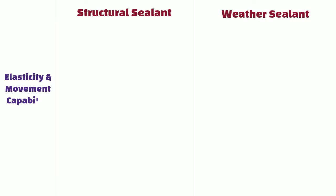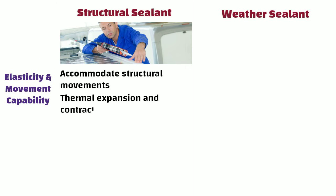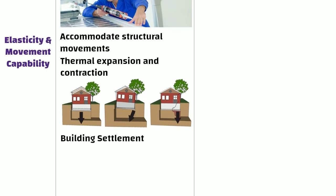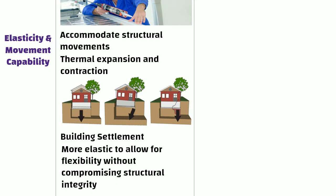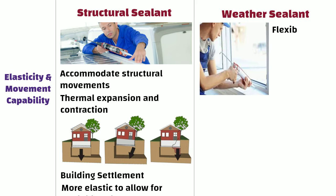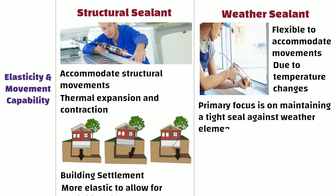Elasticity and movement capability. Structural sealants need to accommodate structural movements including thermal expansion and contraction as well as building settlement. They are typically more elastic to allow for flexibility without compromising structural integrity. On the other hand, weather sealants also need to be flexible to accommodate movements in the building due to temperature changes, but their primary focus is on maintaining a tight seal against weather elements.